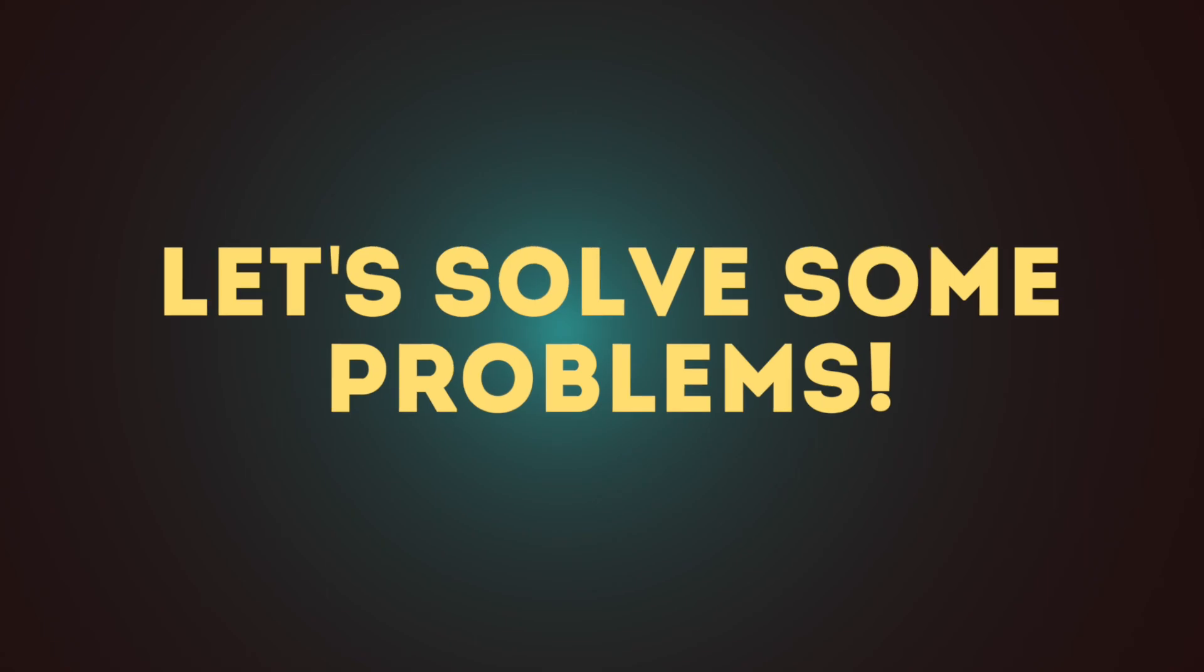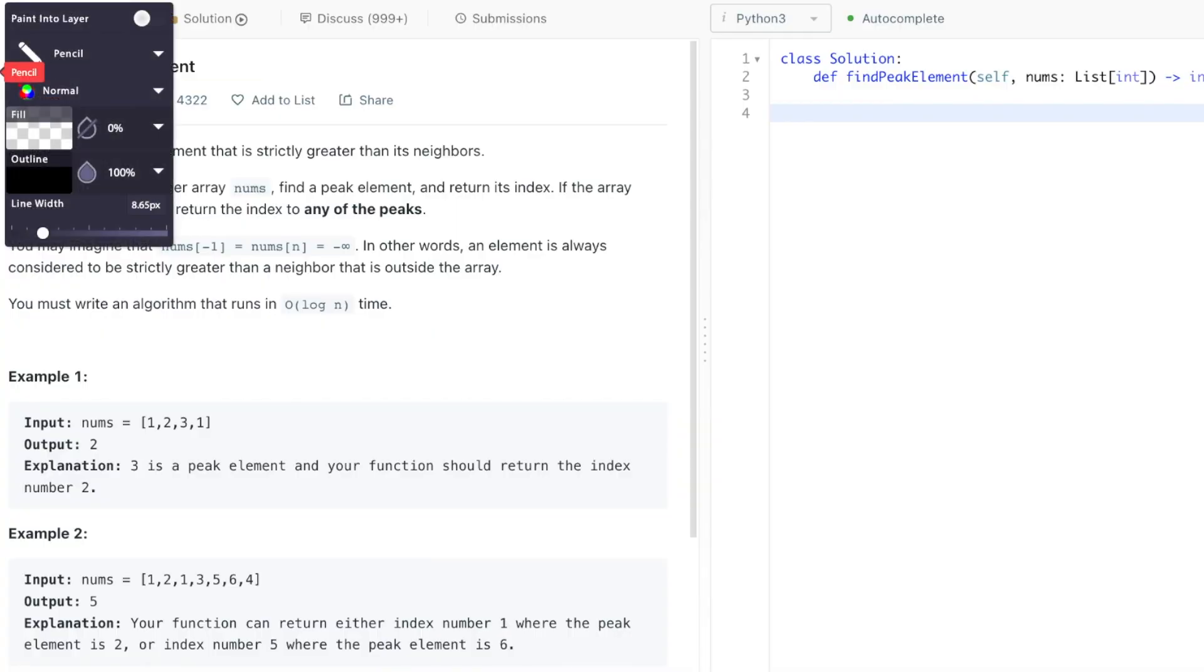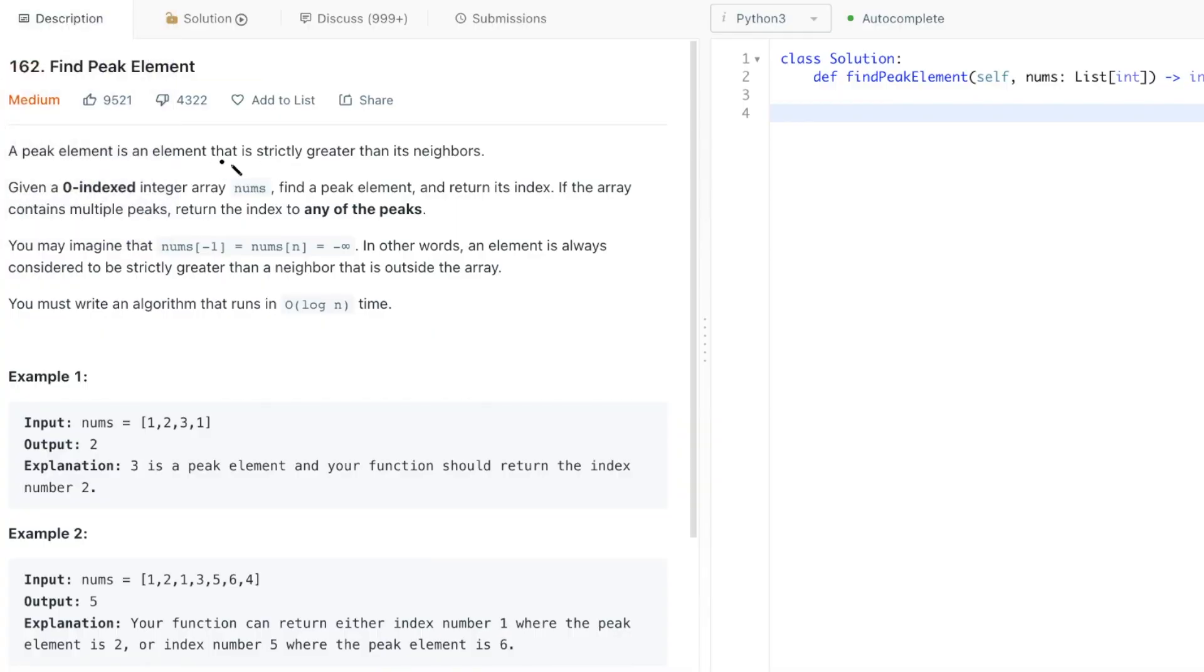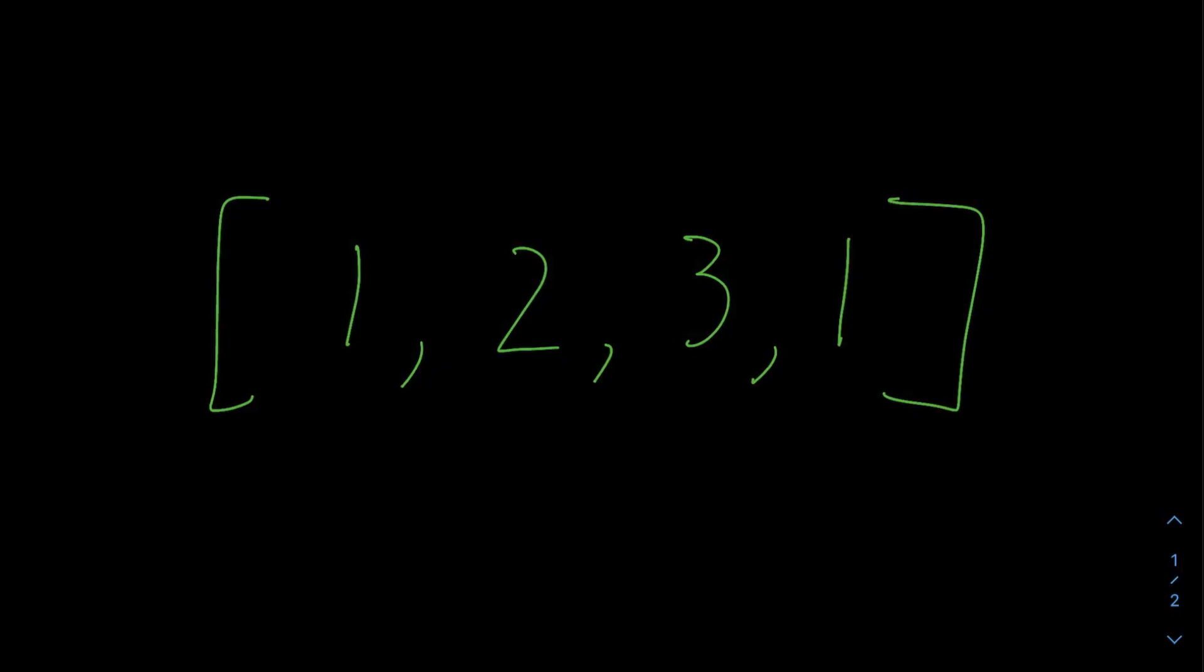So let's try LeetCode 162, find peak element. A peak element is an element that is strictly greater than its neighbors. Given a zero-indexed integer array nums, find a peak element and return its index. If the array contains multiple peaks, return the index to any of the peaks. The problem also states you can assume if the neighbor of the element is outside the array, we can assume the neighbor is smaller. This is important because it means we only need to check for one neighbor to ensure it's a peak.